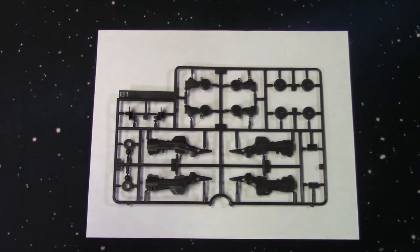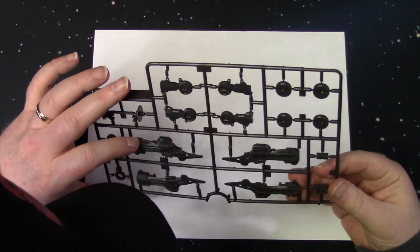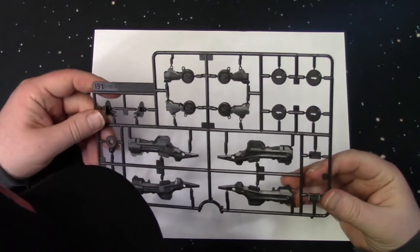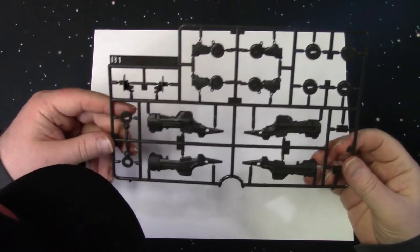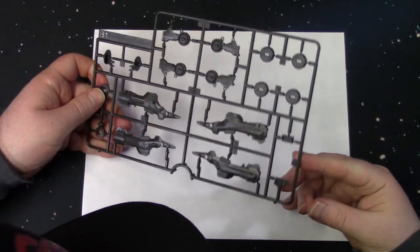Here we have the B1 sprue. More parts. I don't know if these are legs or arms. These little joints here. I've got to paint these up. So, it's pretty cool.